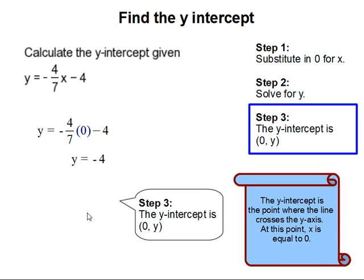Step 3: The y-intercept is then at 0, y. So the line of our equation crosses the y-axis at 0, negative 4.